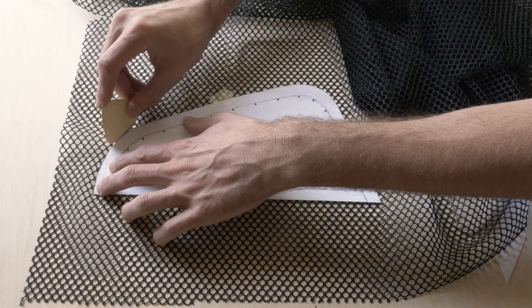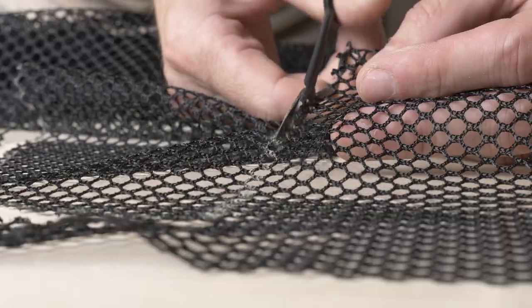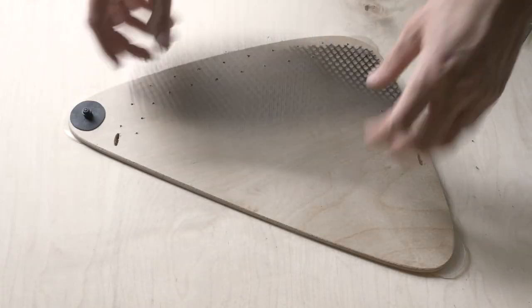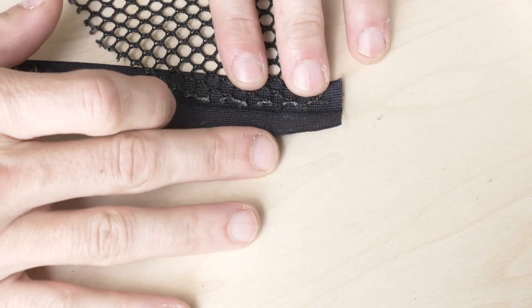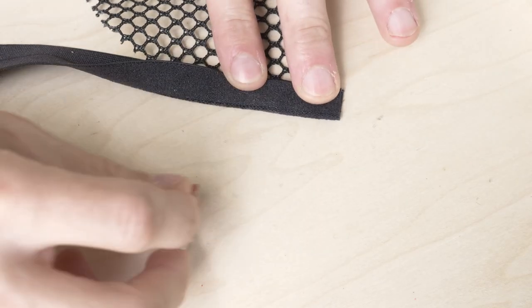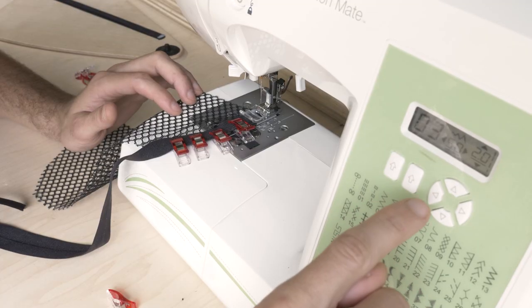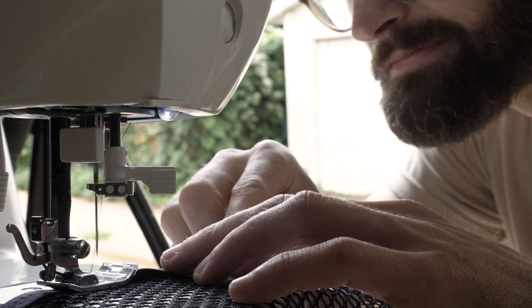Next, I used fabric chalk to transfer the template over to my mesh fabric and cut that out. Then, I sandwiched the edge of the mesh between the elastic edging, clipped it into place, and used a stretchy zigzag stitch all the way around to allow the elastic to remain stretchy.